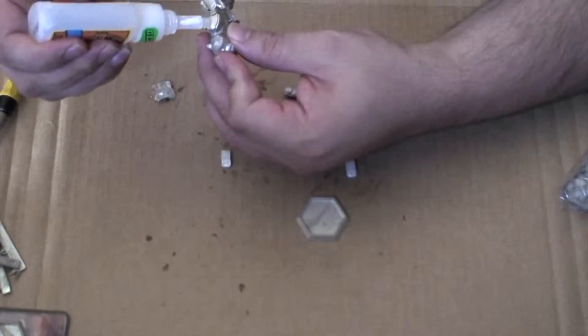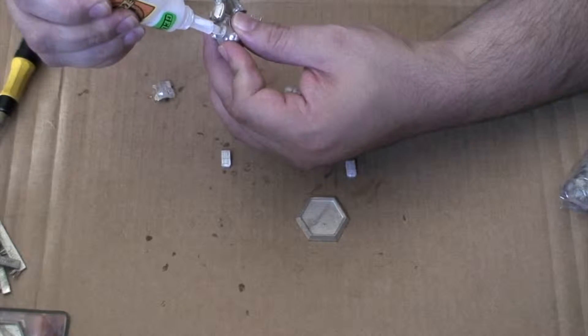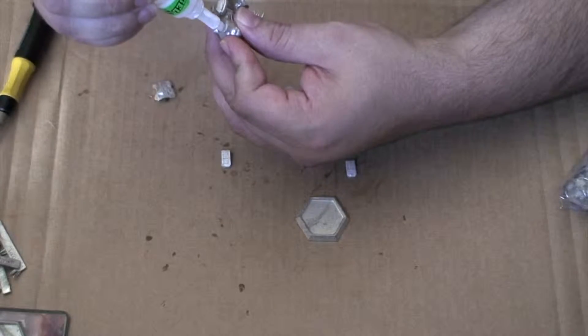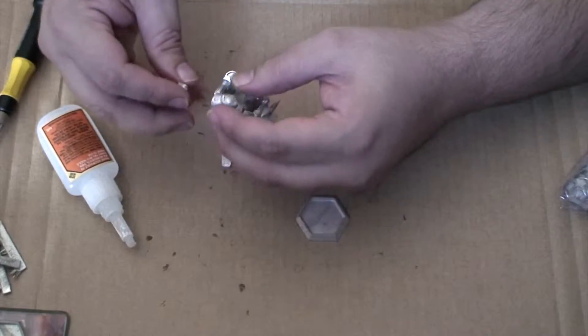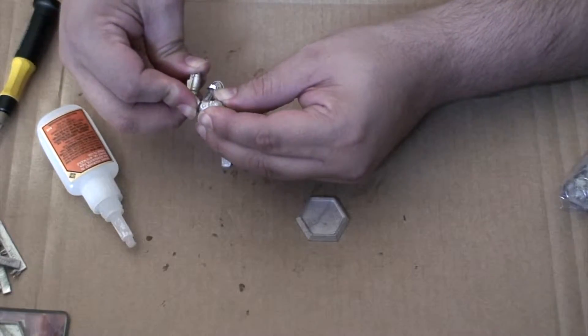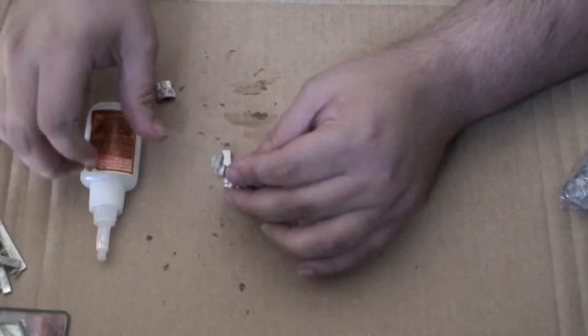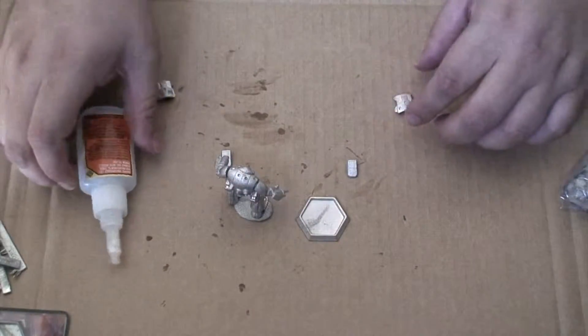Now that that's set, we'll attach the other arm. This one again is a ball joint. So now that these are on, we'll be attaching these rear pieces on here.